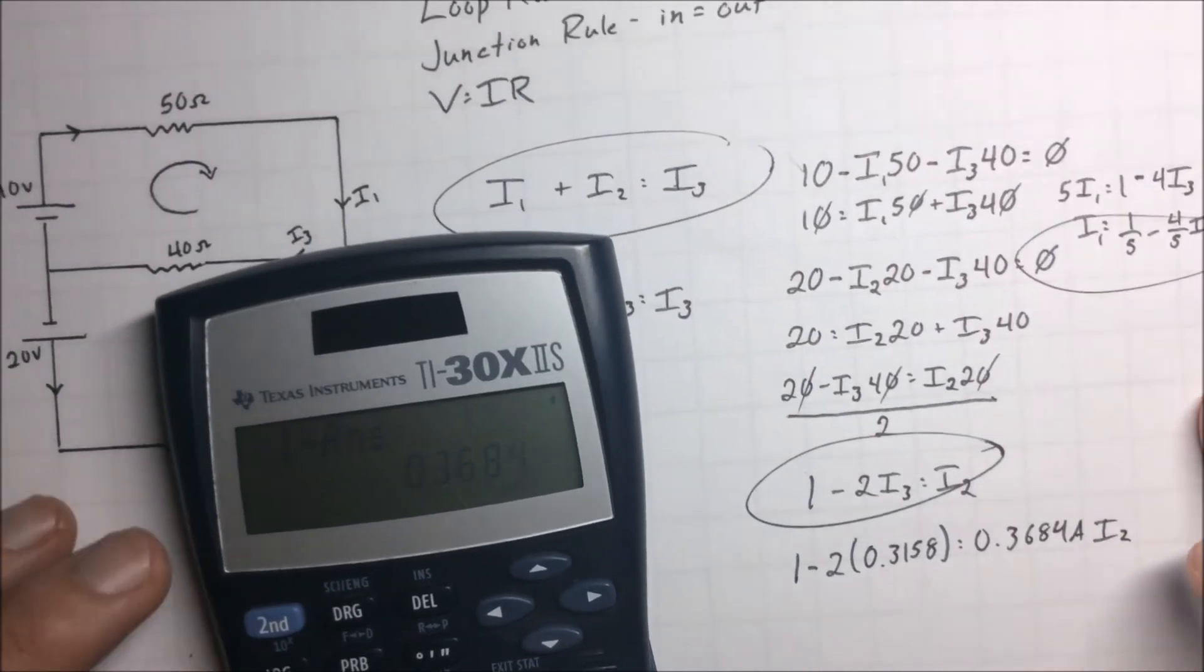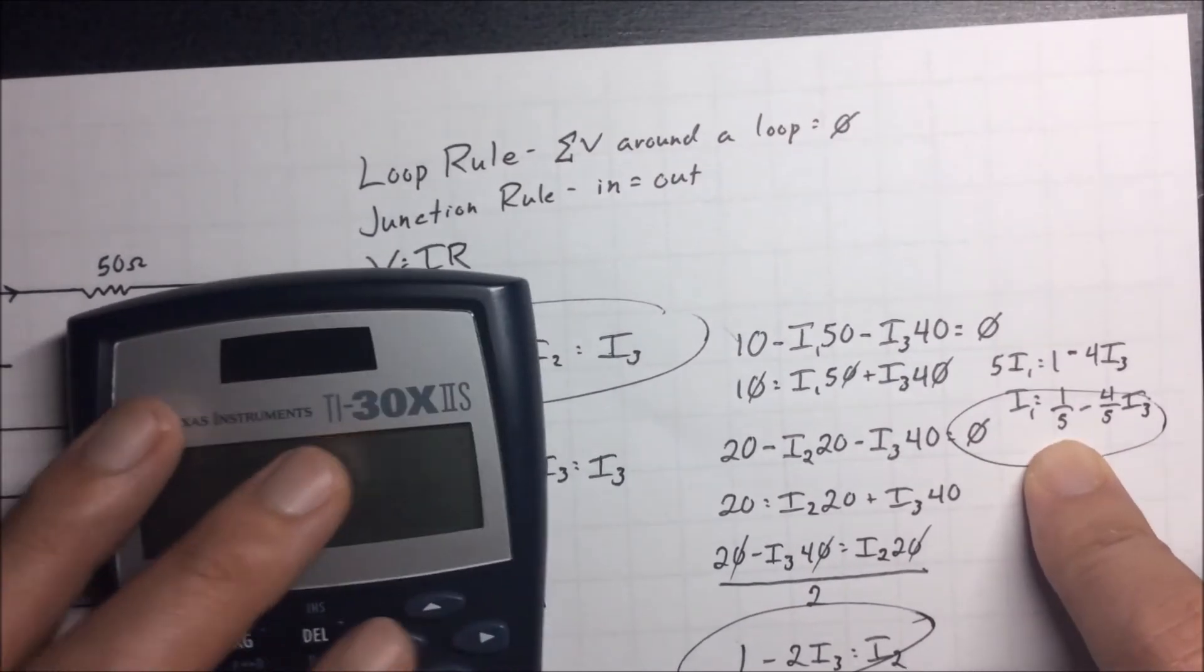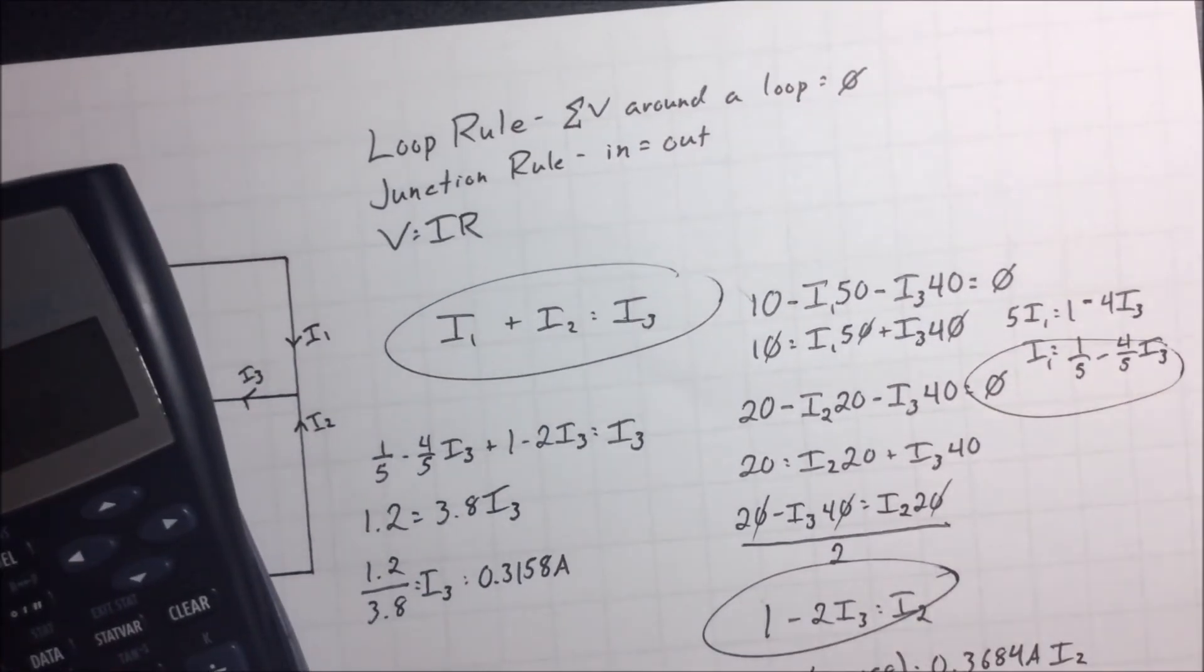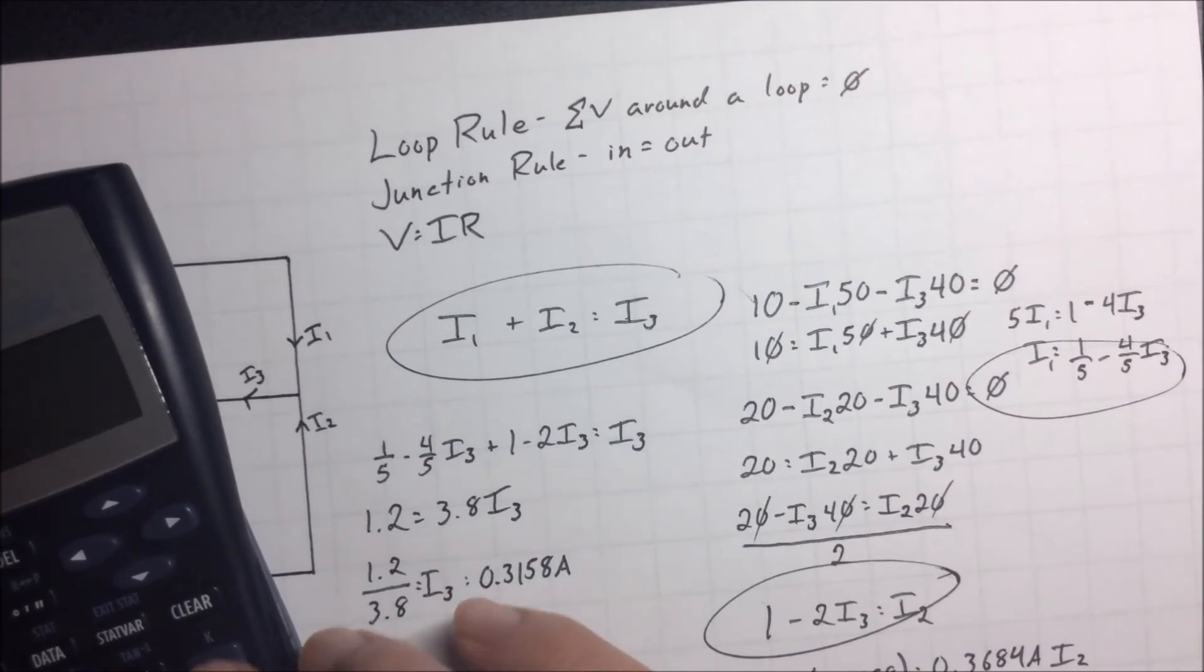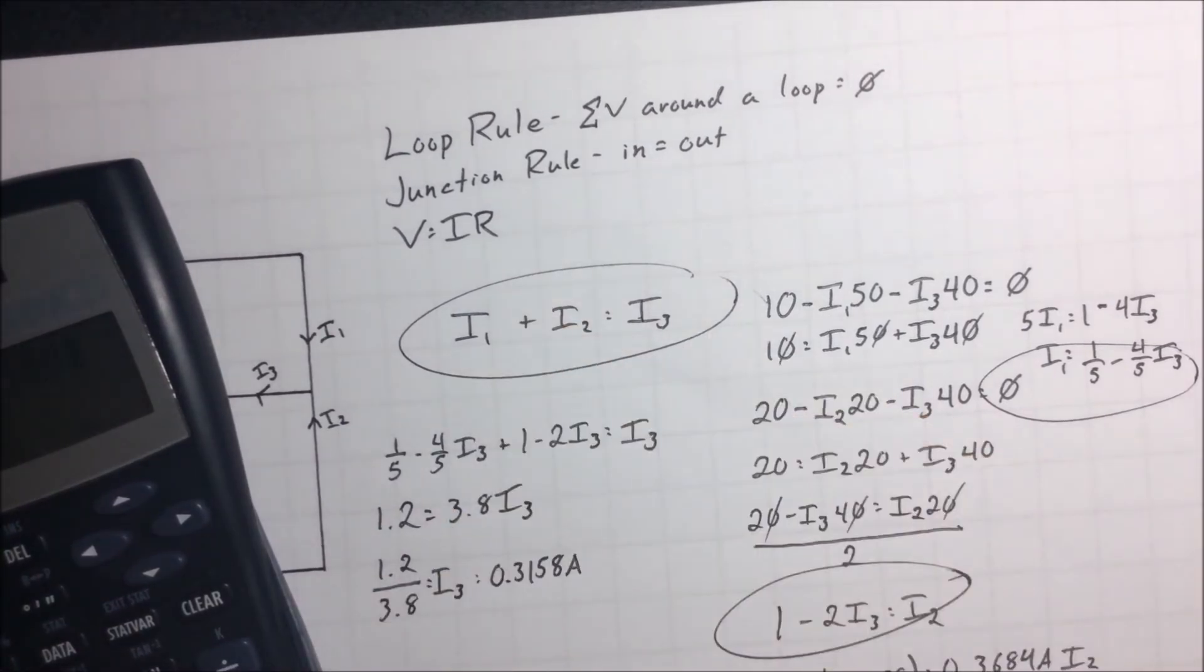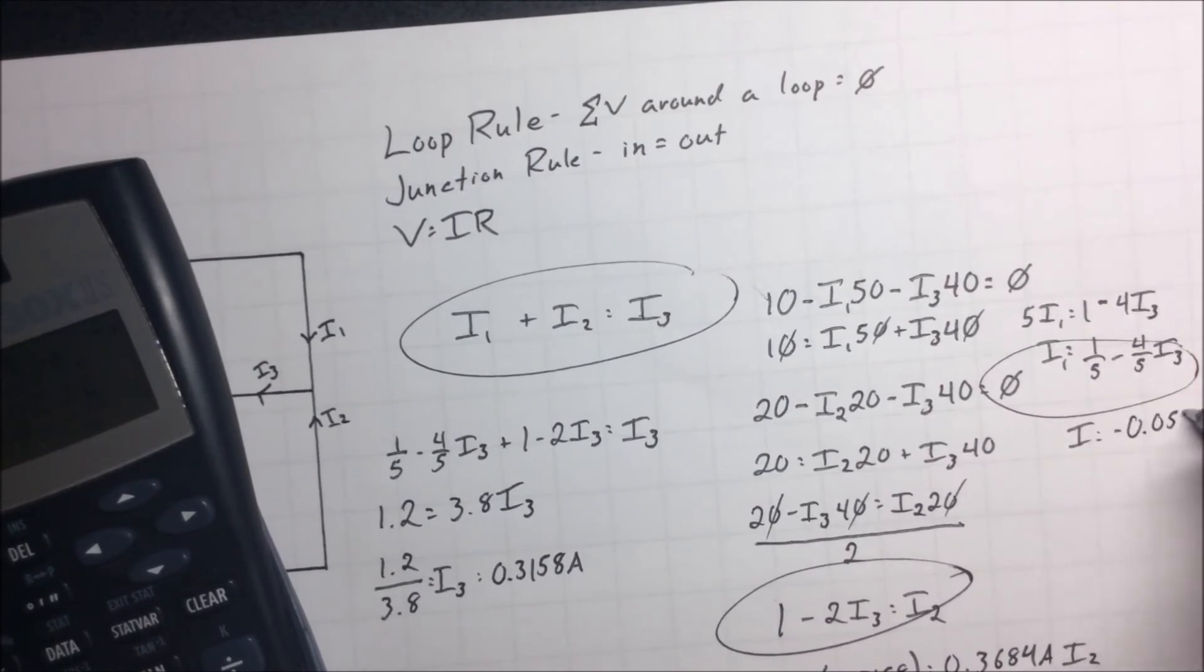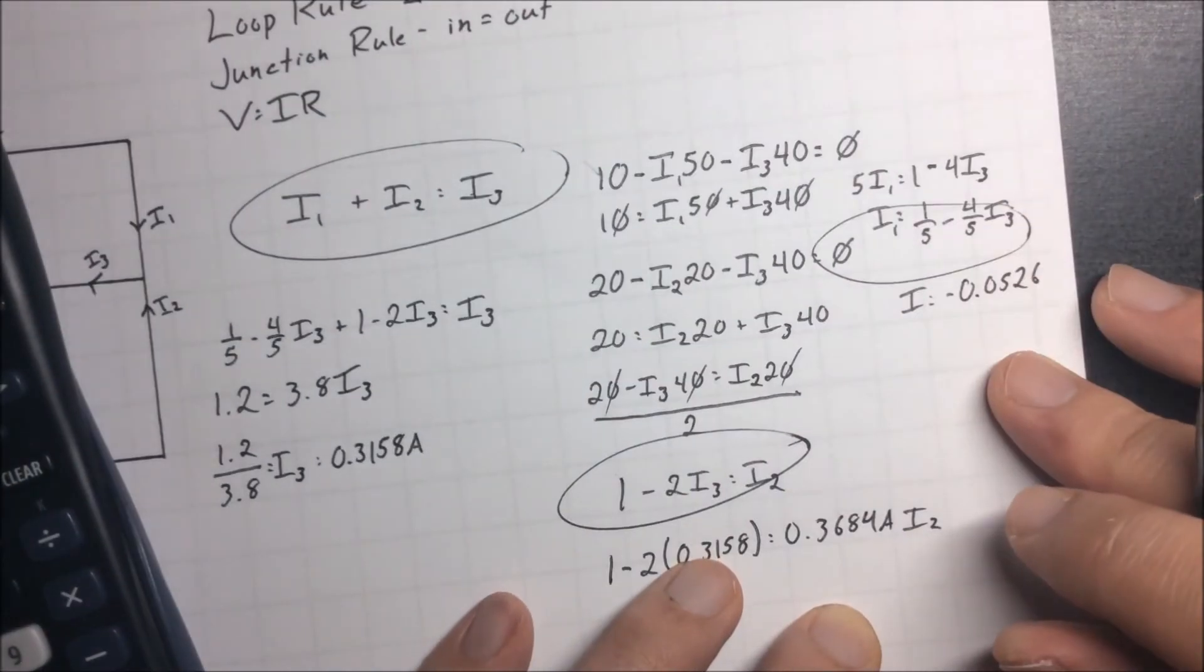And then back up here I'm going to say that I3 was, let's see, let's do 1 fifth or 5 minus 4 fifths times I3. I3 was 0.3158, of course I could have used the junction rule for that I2 to figure it out, and I get I1 to be negative 0.0526.